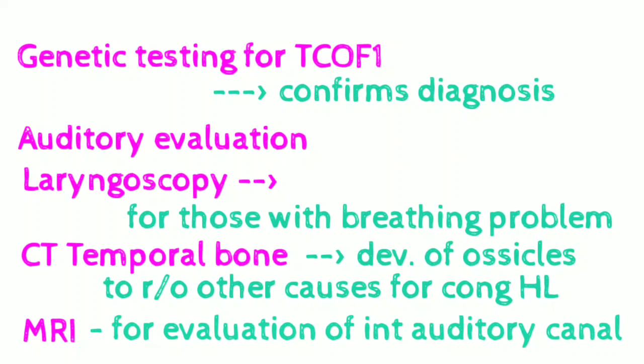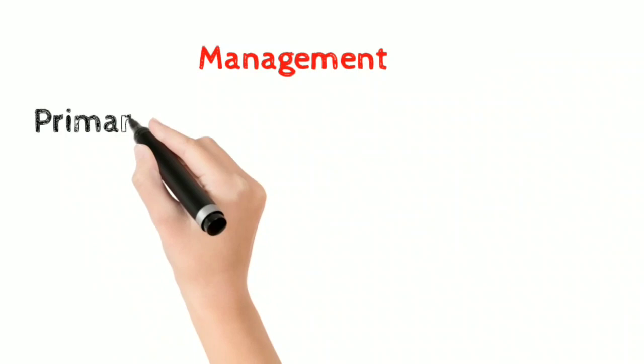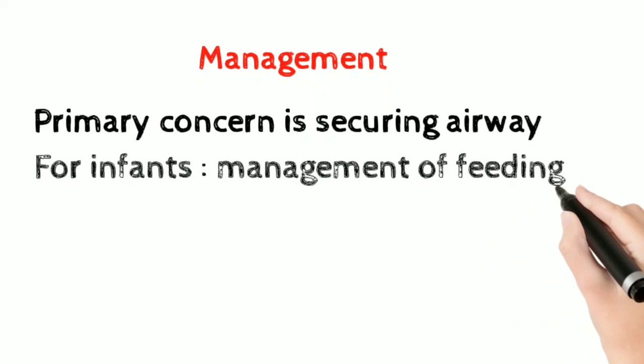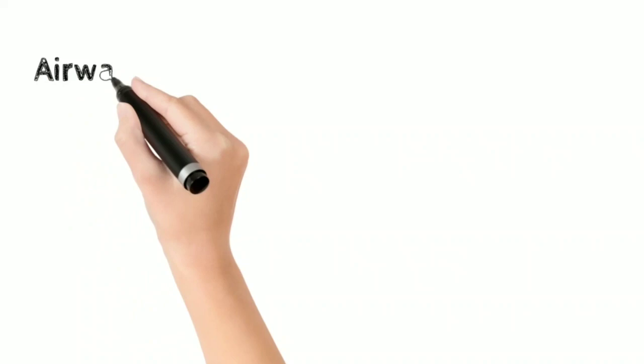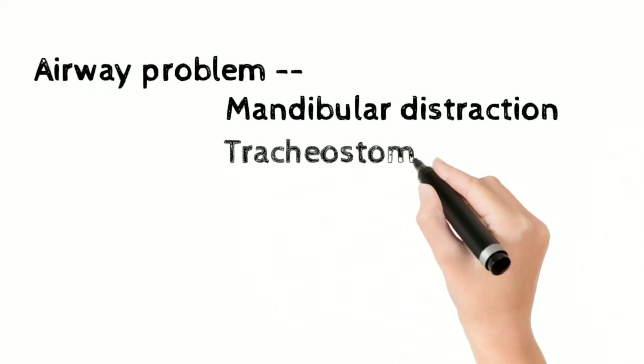Now let's look at the management. When a child is born with this syndrome, the primary concern is securing the airway. Management of airway and feeding is the most important for infants. A multidisciplinary approach is needed depending on the age. For airway problems, mandibular distraction and tracheostomy may be needed. Cleft palate repair has to be done at 9 to 12 months of age.